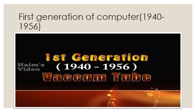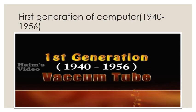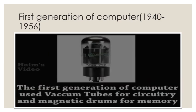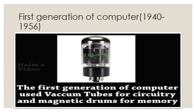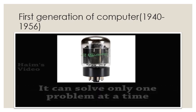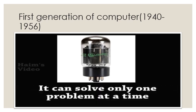The first generation of computer was from 1940 to 1956 and its main component was the vacuum tube. The first generation of computers used vacuum tubes for circuitry and magnetic drums for memory. They were able to perform only one problem at a time. The image shown here is a vacuum tube.